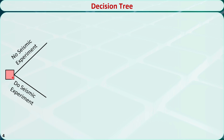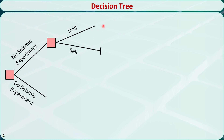Let's try to build a decision tree for this project. At the very beginning, they need to make a decision about whether they should do the seismic experiment — because it's a decision node, we represent it with a square. They have two options: no seismic experiment or do the seismic experiment. If they don't do the experiment, they need to make another decision immediately: drill or sell. If they sell the land, they don't need to make further decisions and this is the terminal branch. If they decide to drill, they need to observe the outcome, so this is an event node represented with a circle. The outcome could be the land contains oil or the land is dry — they are both terminal branches.